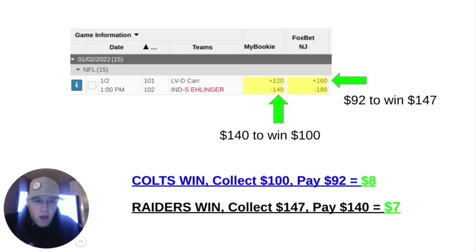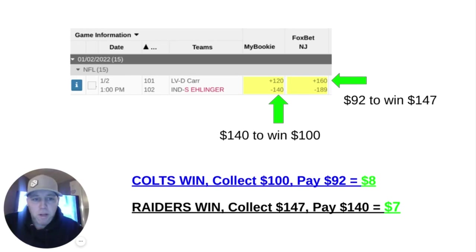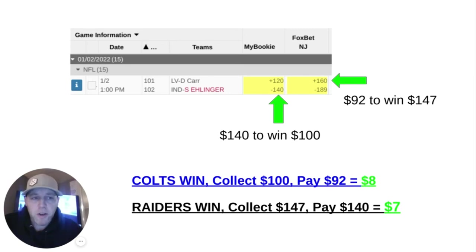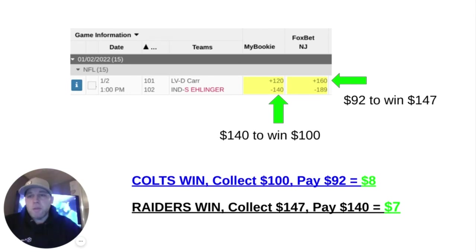Some of you might be thinking $7 is not a lot — but we're talking about a risk-free $7, and the example I used is rare. You're not going to find these types of differences every day. Also, the more money you stake or risk, the bigger the profit. That's $7 profit on a total stake of $232 — the $92 risked on the Raiders and the $140 on the Colts. That's the total amount staked. A total stake of $232 resulted in a guaranteed profit of $7. We can figure out our arbitrage profit by choosing a total stake number, but in order to do that, we need to do a little math.